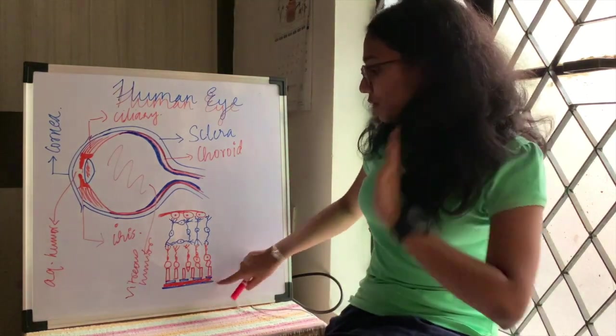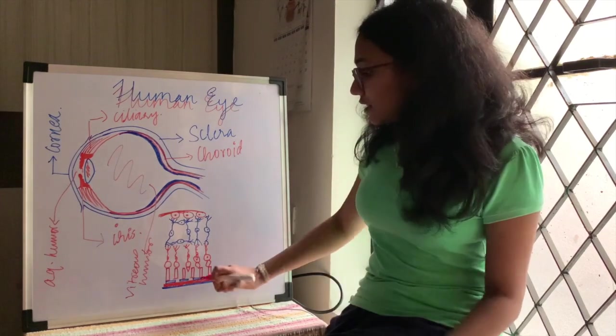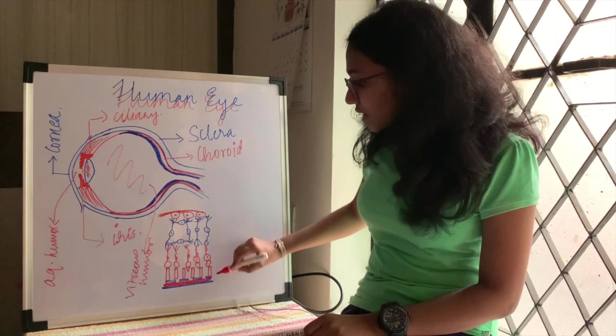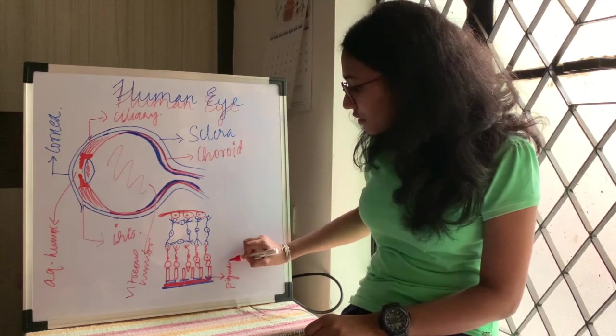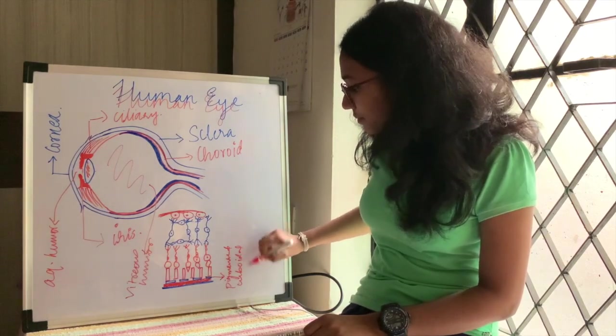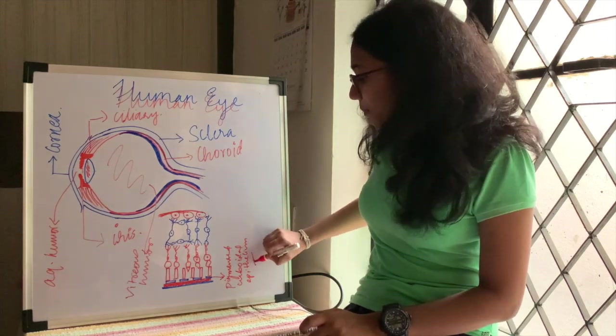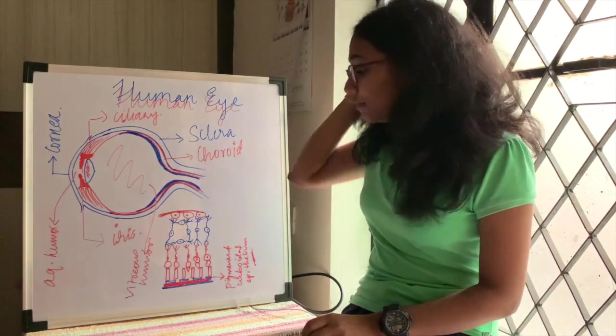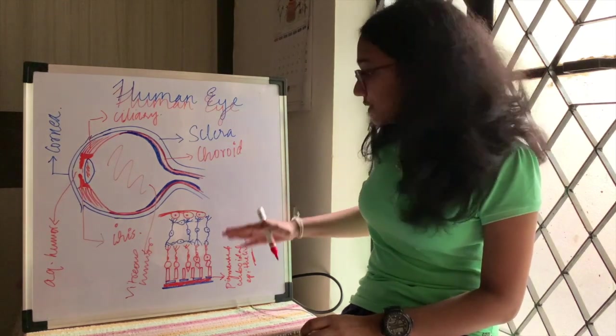This blue layer is the sclera, this red layer is the choroid. Now let's come to retina. You see these blue boxes right here? These are pigmented cuboidal epithelium.